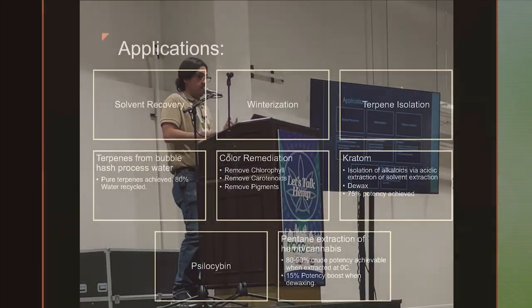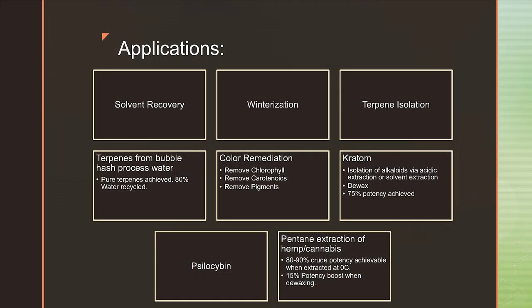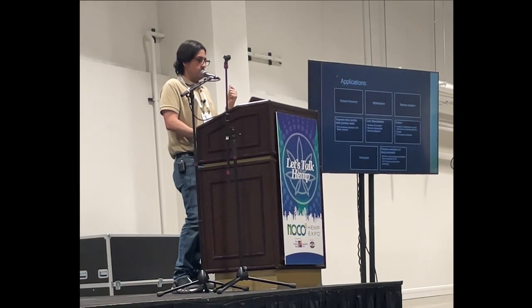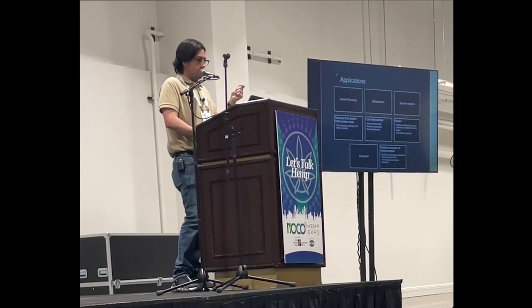Applications for membranes include solvent recovery — pretty much any solvent from pentane down to water — as well as winterization and terpene isolation. You can actually remove terpenes and cannabinoids from water if you do a solventless extraction like ice water or cold water extraction. There's color remediation where you can remove carotenoids and pigments. There are lots of applications for kratom, kava, and psilocybin, and applications with pentane, hexane, and heptane where you can remove sugars. You can really target the specific particles you want with this technology.